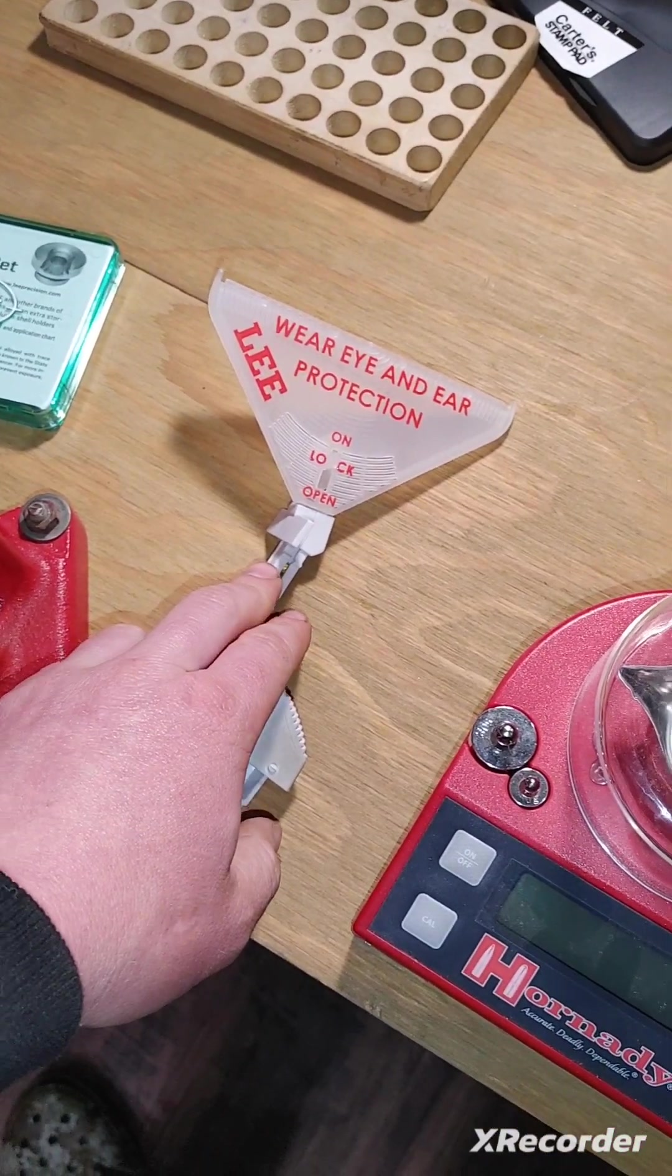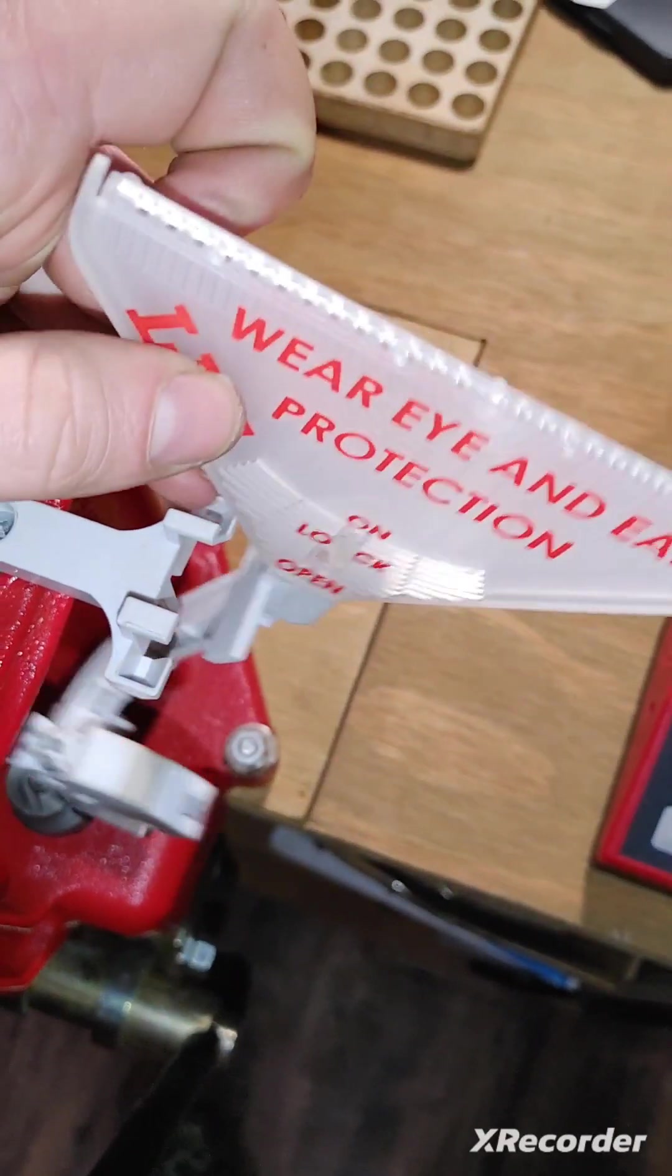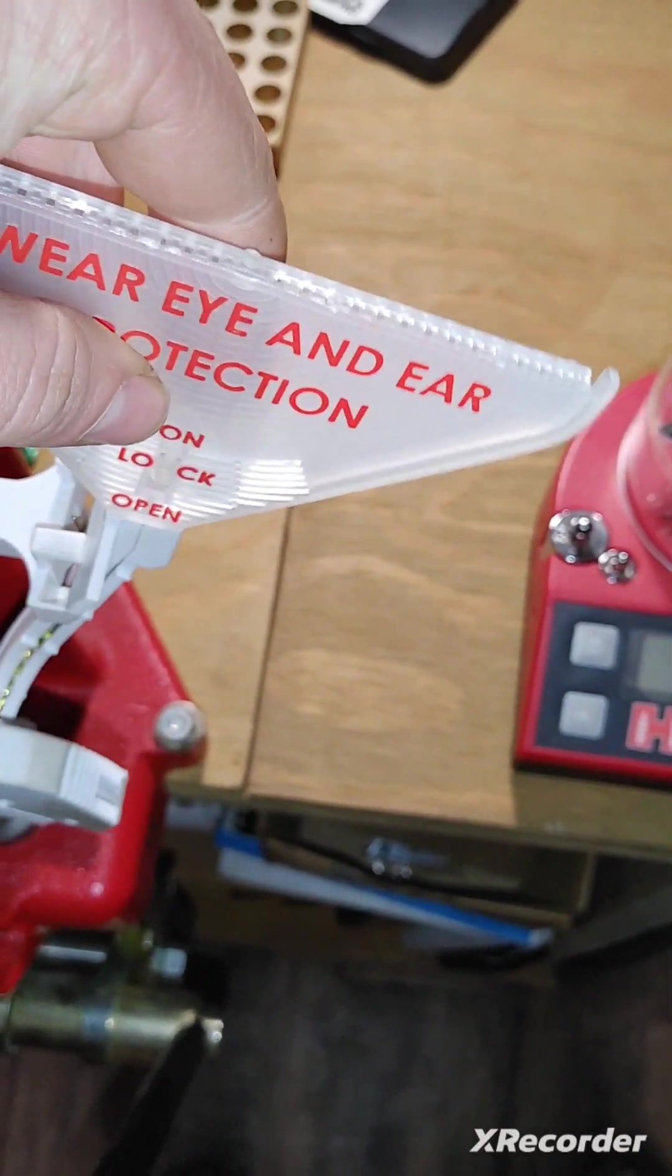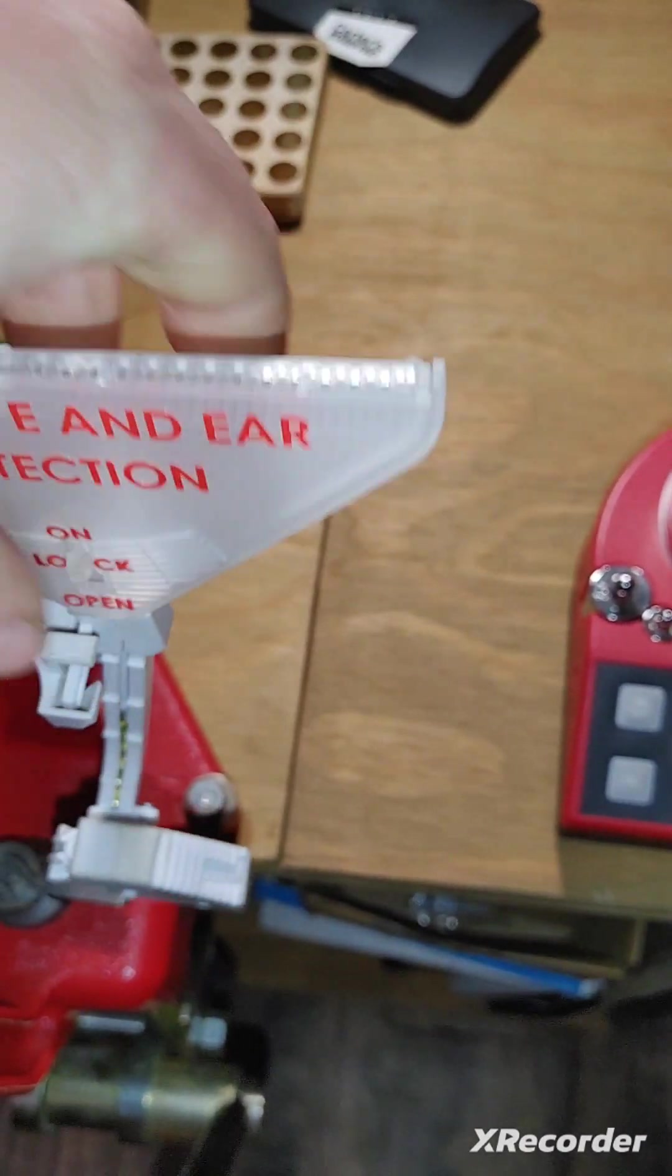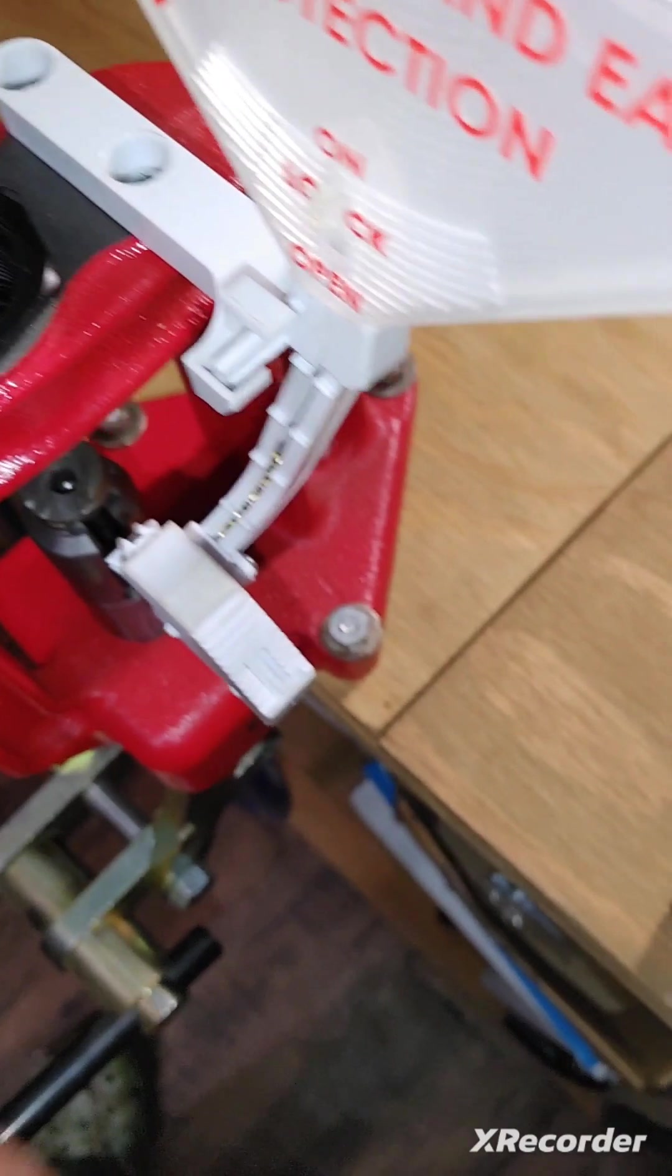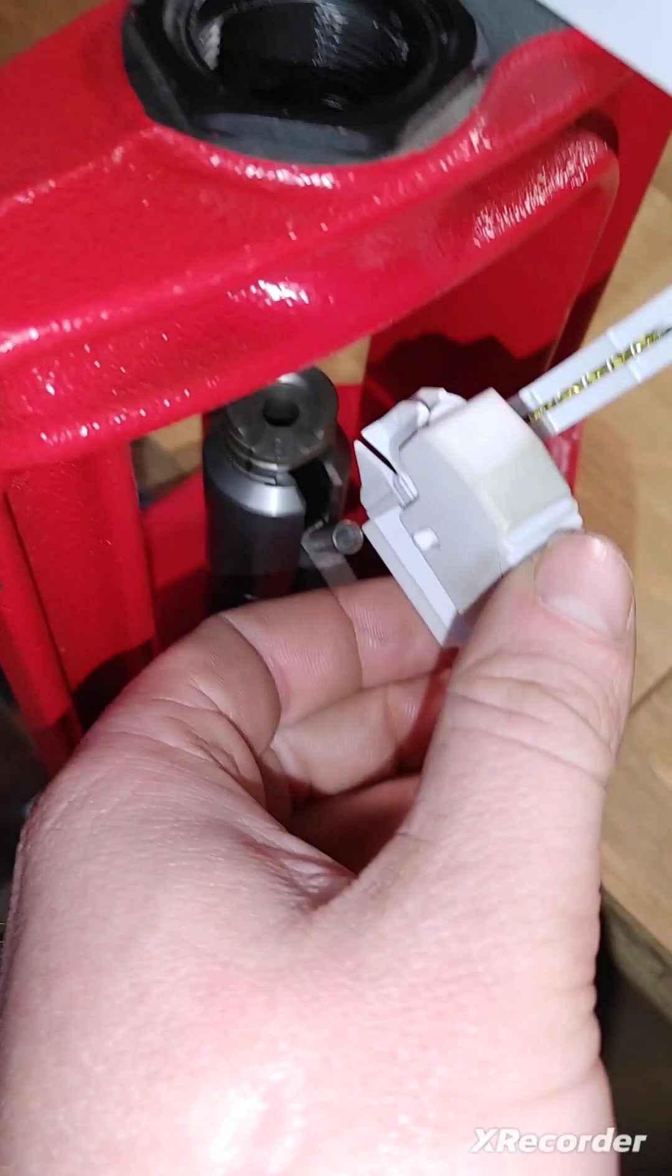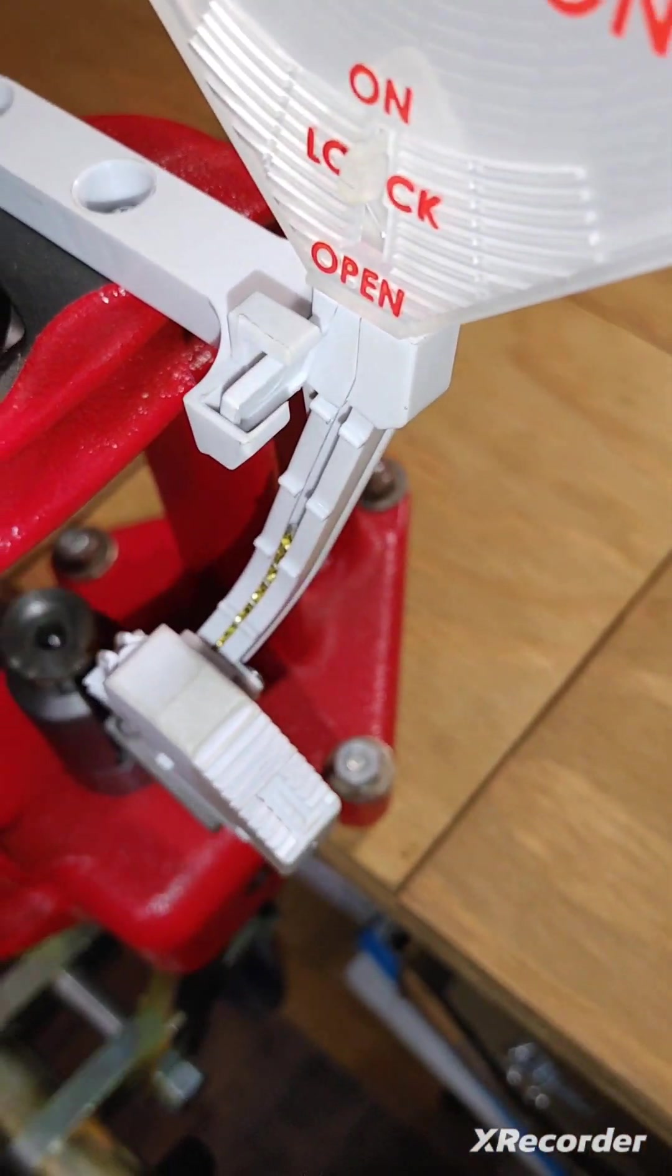This Lee Primer tool snaps right on here. And then it just makes it so much easier because you just swing it in here and it just puts a primer right on there without even having to mess with them.